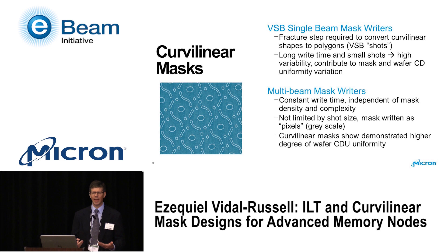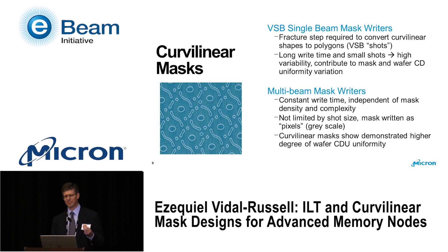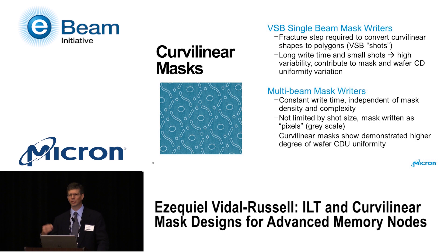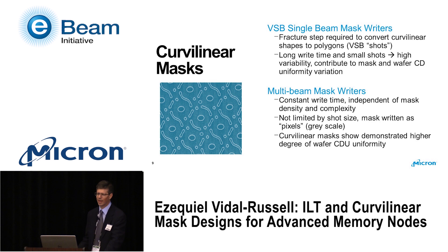Why curvilinear now? ILT was proposed as a curvilinear solution from the very beginning, but at the time mask writers weren't ready to handle that level of data complexity. We had to manufacture masks with variable-shaped beams, requiring fracturing the data into very small shots to reproduce curvilinear shapes as closely as possible. That resulted in very long write times with long-range CD uniformity issues, and the small shots required to produce curvilinear shapes introduced high shot-to-shot variability that contributed to local CD uniformity variation — which was bad for the wafer.